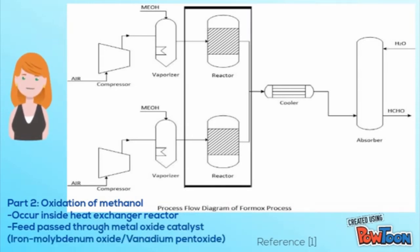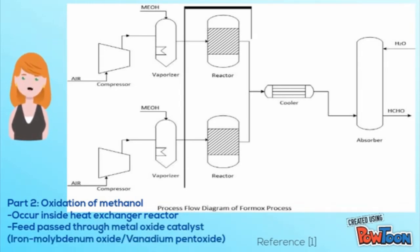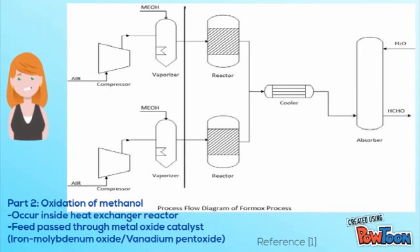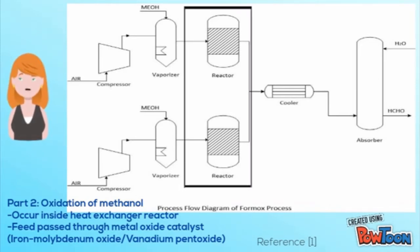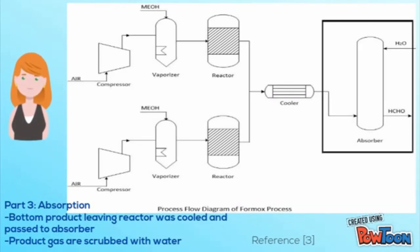Part two is oxidation of methanol. This part occurs inside a heat exchanger reactor. The feed is passed through a metal oxide catalyst such as iron molybdenum oxide or vanadium pentoxide.